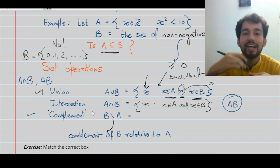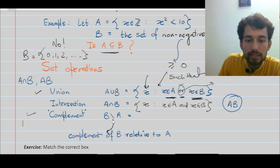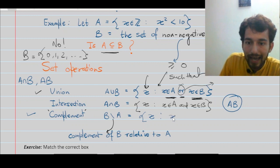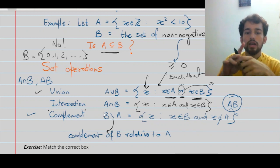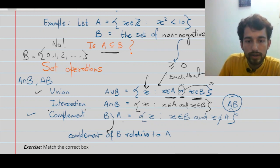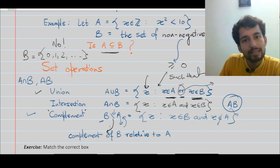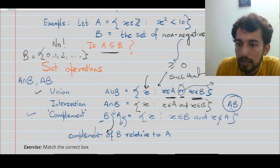The third important operation is complement. The complement of set B relative to set A collects all x such that x belongs to B and x does not belong to A. So complement means you are excluding all elements of the set written after the operation symbol — here the set A — and collecting only those elements in B that satisfy this property simultaneously.